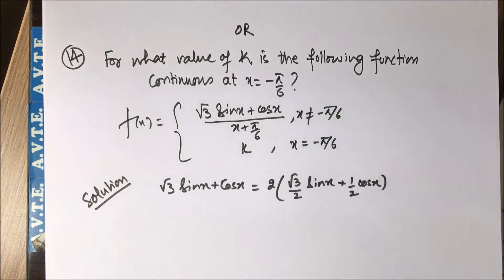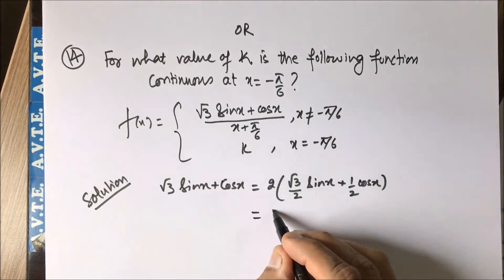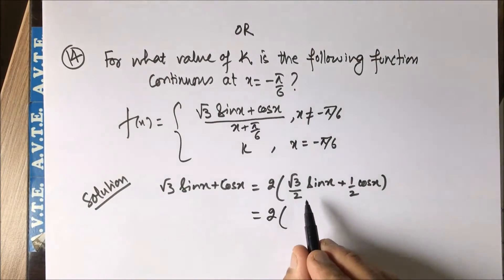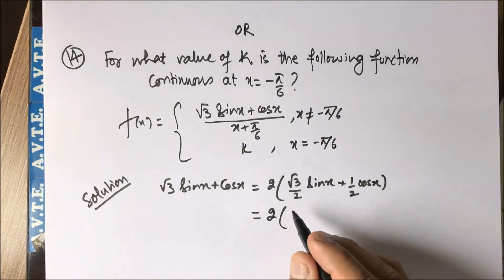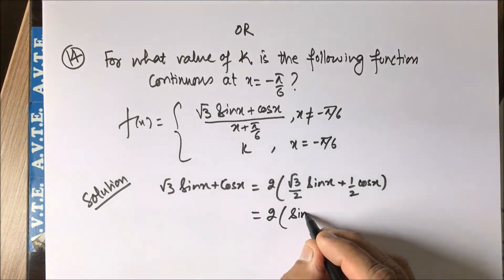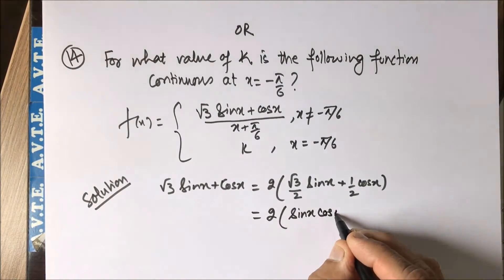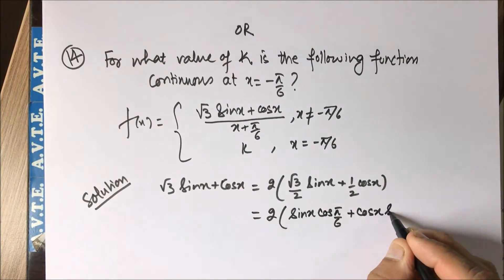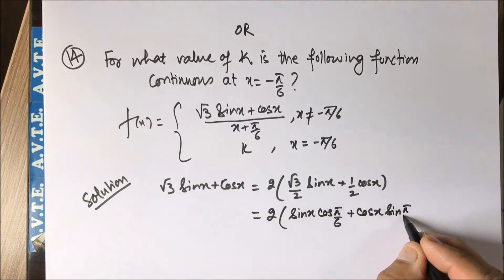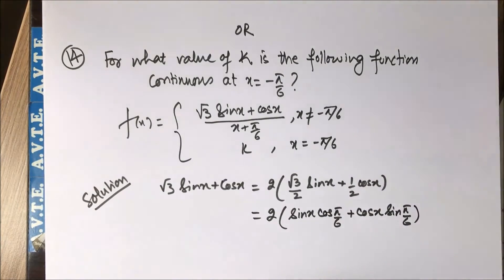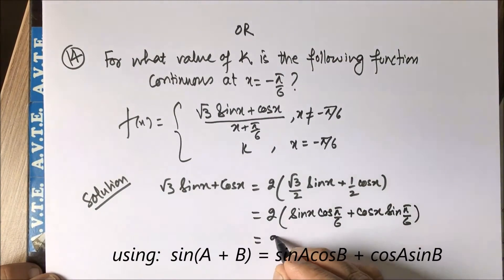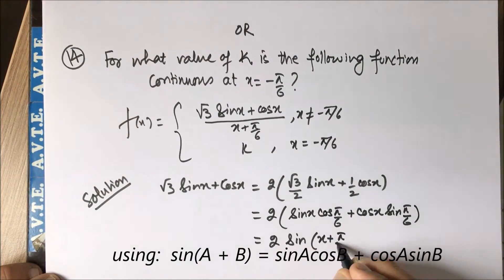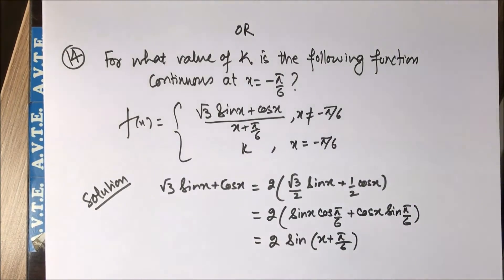Now, can you tell me what the principal value is? The value of cos of pi by 6 is root 3 by 2, and sin of pi by 6 is 1/2. So this entire expression can be written as 2 times sin of (x plus pi by 6). With this trick you can solve the question easily.